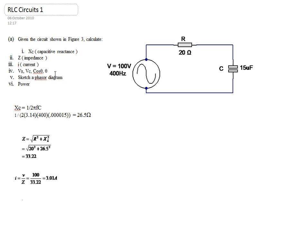The next part is to calculate the voltage across the resistor, the voltage across the capacitor, the power factor, and the phase angle. To calculate the voltage across the resistor, it's just I multiplied by R. And to calculate the voltage across the capacitor, it's just I multiplied by Xc. So VR is 3.01 multiplied by 20 ohms, which gives 60 volts. And the voltage across the capacitor is 3.01 multiplied by 26.5, which gives 79.7 volts.